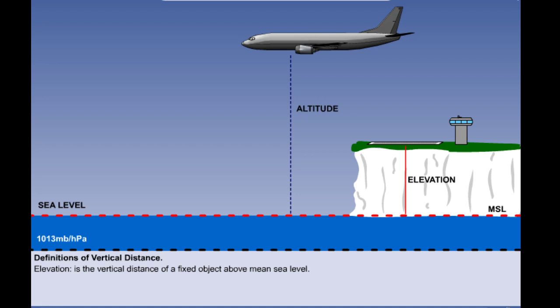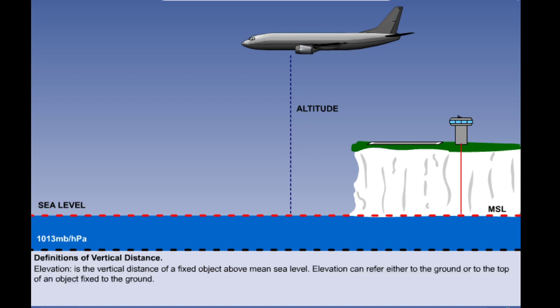Therefore elevation is referring to the vertical distance of a runway above the sea. Elevations can be negative — Amsterdam's Schiphol airport for instance is 11 feet below mean sea level and so has an elevation of minus 11. However, elevations do not have to refer to the ground. The top of a control tower has an elevation which will be the elevation of the ground on which it is built plus the extra distance to the top.